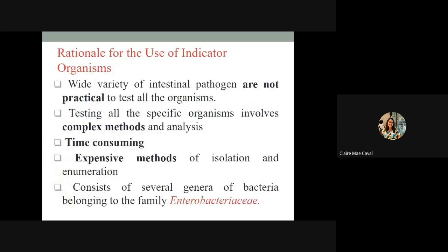Why are coliform bacteria chosen as indicator organisms? First, there is a wide variety of intestinal pathogens that are not practical to test individually. Second, testing all specific organisms involves complex methods. Third, it would be time-consuming. Fourth, isolation and enumeration methods are expensive. And lastly, coliform bacteria belong to the family Enterobacteriaceae, which includes most clinically and medically significant bacteria.